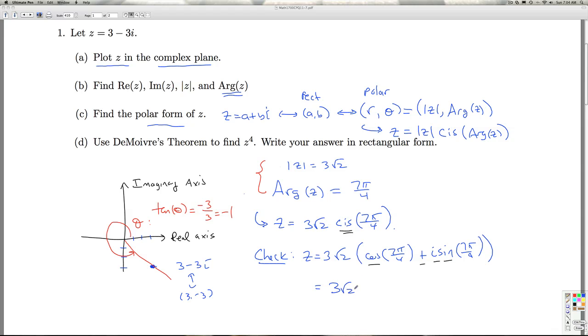And so we get 3 radical 2 times the cosine of 7 pi over 4, square root 2 over 2, plus I times the sine of 7 pi over 4. That's negative square root 2 over 2. So as I multiply this together, I get 3 minus the radical 2 squared is 2. That cancels, so I get a 3 there. Here I get a negative 3, so I get back to Z. So that's the polar form of Z.